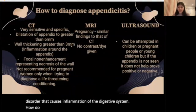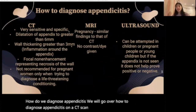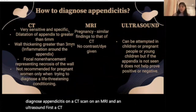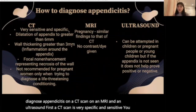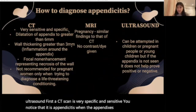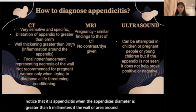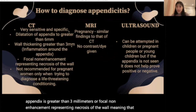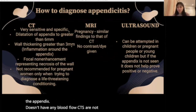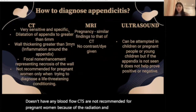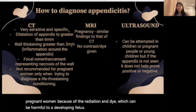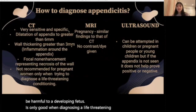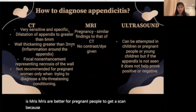Next, how do we diagnose appendicitis? We will go over how to diagnose appendicitis on a CT scan, an MRI, and an ultrasound. A CT scan is very specific and sensitive. You know it is appendicitis when the appendix diameter is greater than six millimeters, if the wall or area around the appendix is greater than three millimeters, or if there is focal non-enhancement representing necrosis of the wall, meaning the appendix doesn't have blood flow. CTs are not recommended for pregnant women because of the radiation and dye, which can be harmful to a developing fetus. MRIs are better for pregnant people because they require less radiation.